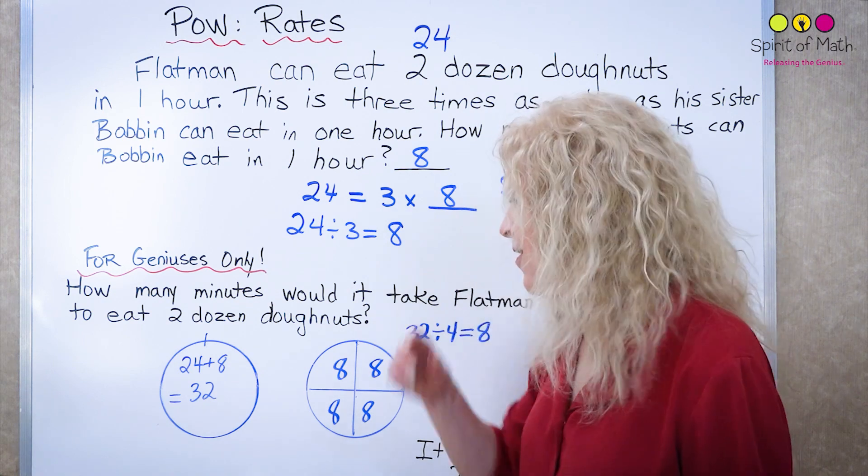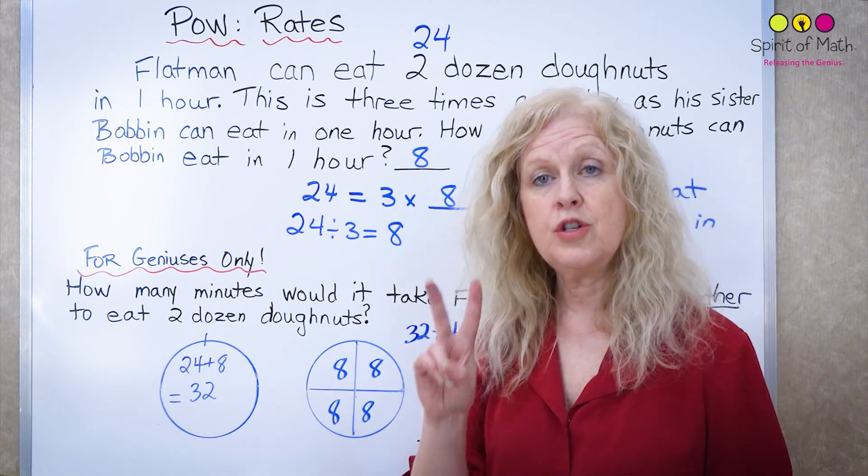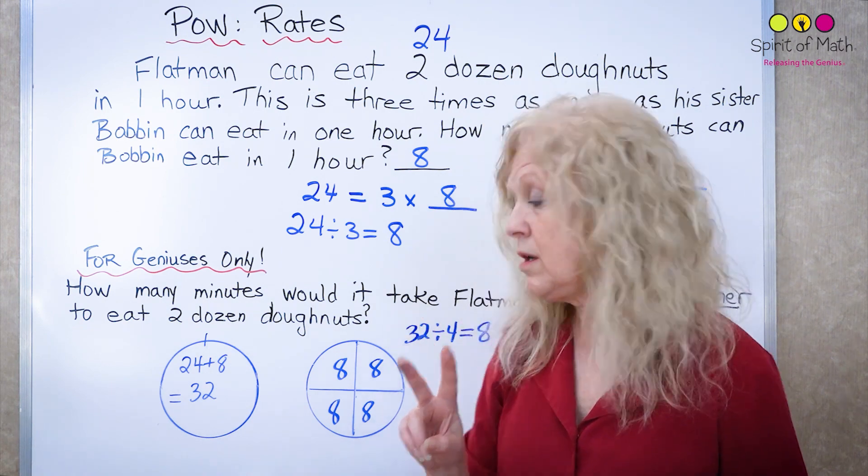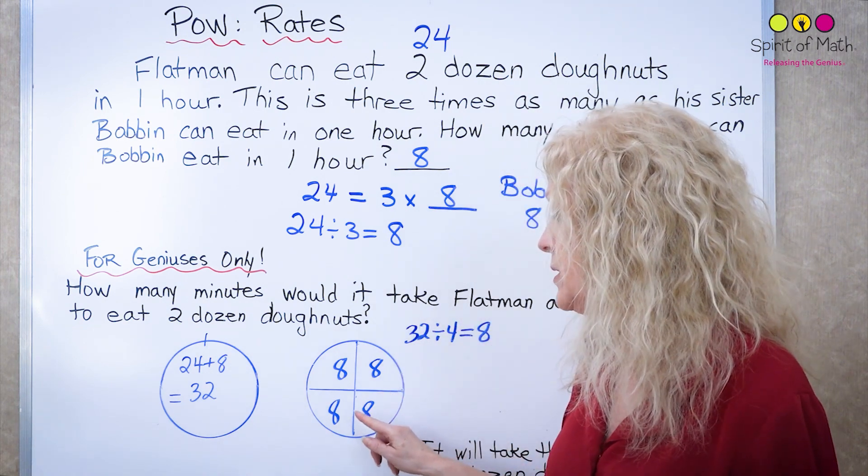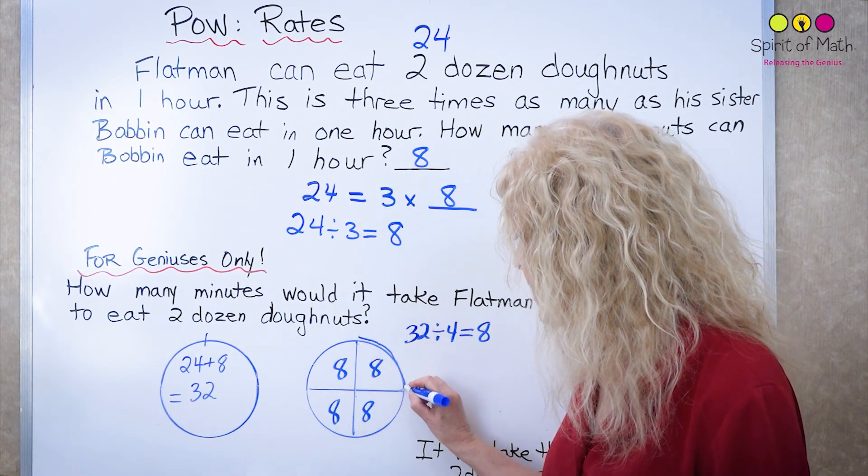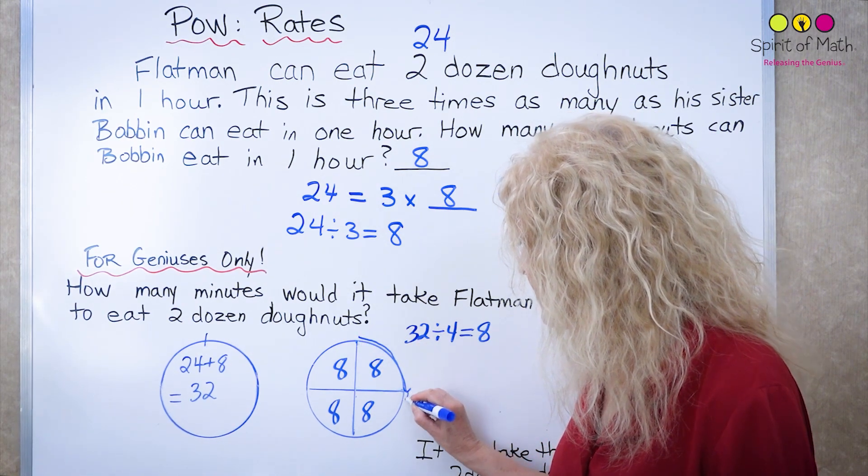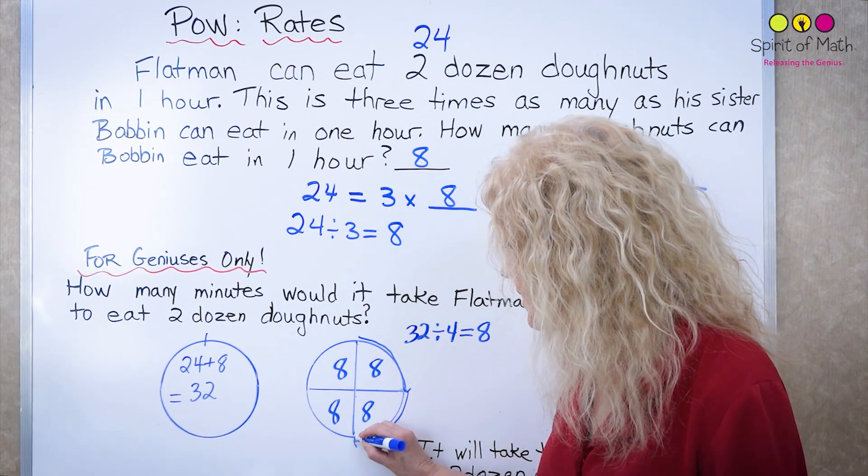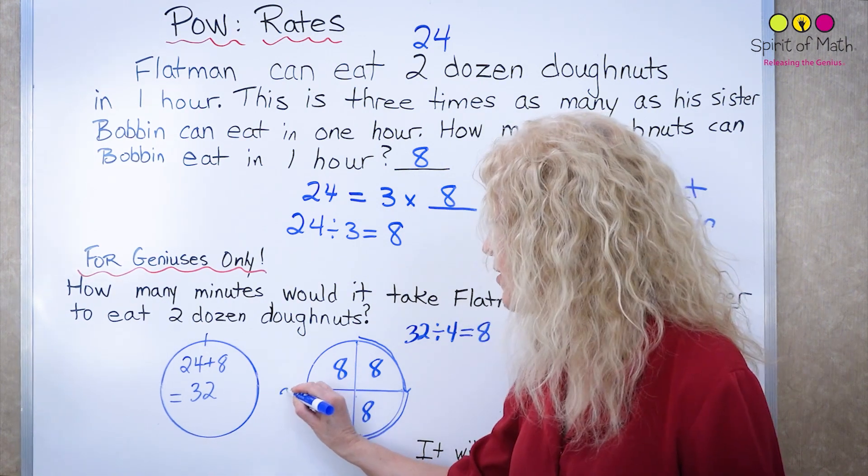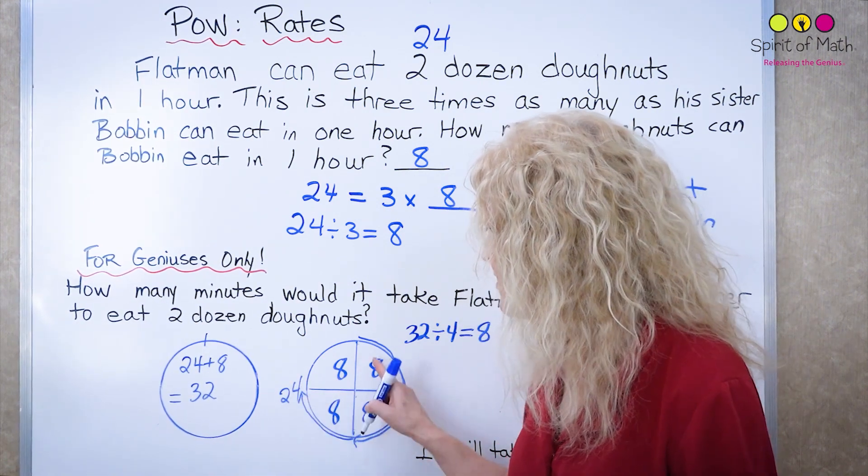Okay now we only want them to eat two dozen doughnuts not all 32. So how long can you see how long it would take if you started here first 15 minutes eight, the second 15 minutes another eight which is 16, the third 15 minutes, ah 24.